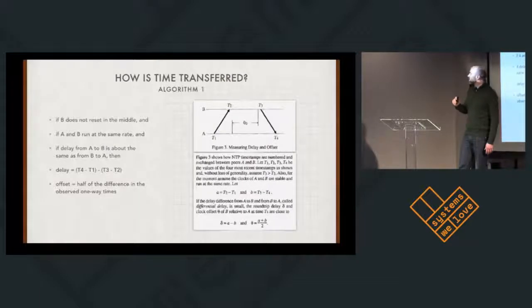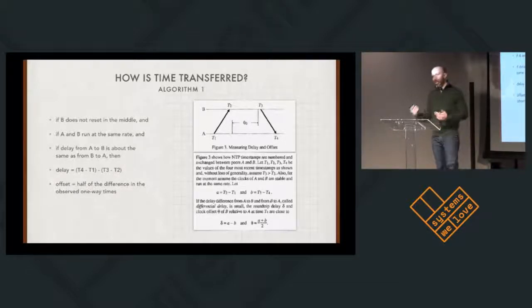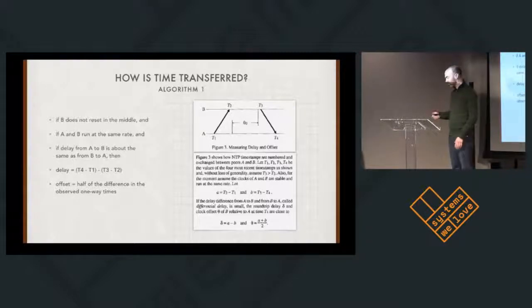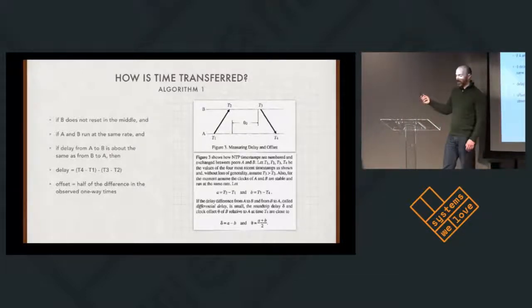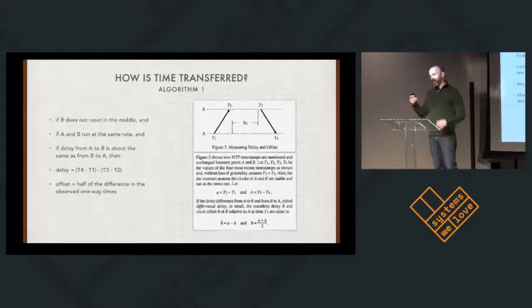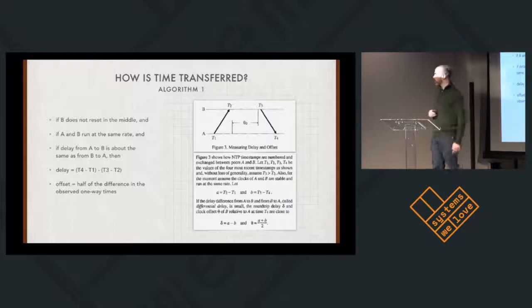To start, how do we actually ask another machine what time it is? Because if we just say what time is it and it gives us back an answer, we don't know how long it took to get to us, how long it took to process and whatnot. So, the basic design of the request is this. If A wants to get the time from B, A sends a message to B saying, please give me your time and this is the time I sent it to you. So that's T1. B, when it receives that message, records the time that it sees, which is T2, sends the message back to A and says, I'm sending you the message at this time, T3, and then A records at T4 what time it received the response.